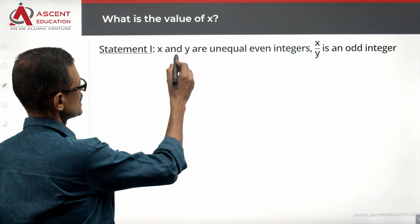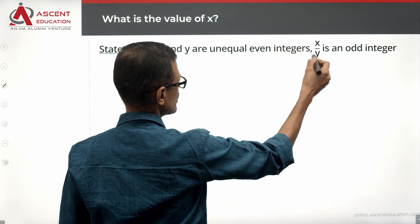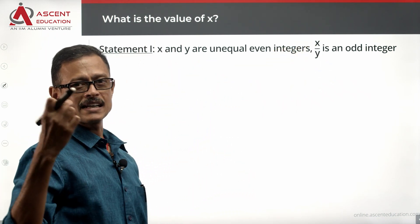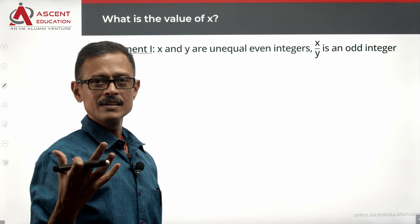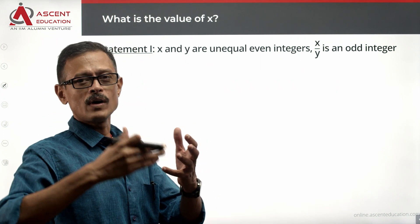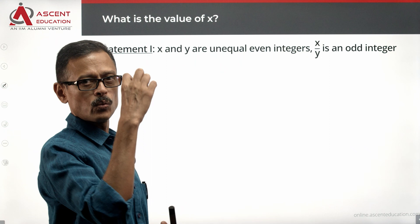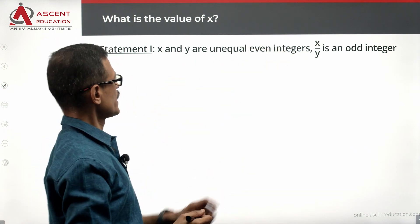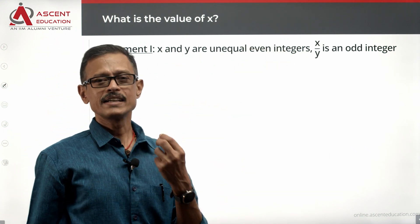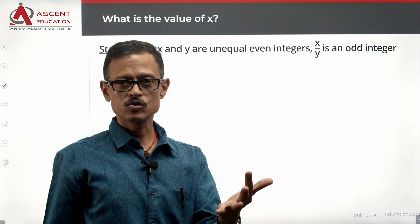First, we are clear. We have an even number and an even number. This is an odd number. And as an odd number, it could be 1, 3, 5, 7, right? If it is 1, then X will be equal to Y. But they are unequal. So it can take values which are 3, 5, 7, and so on and so forth.